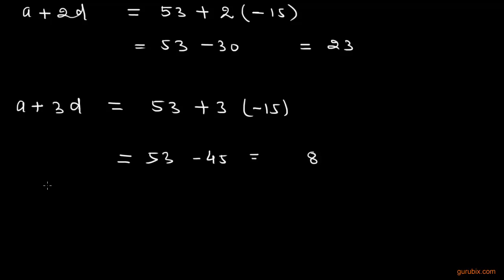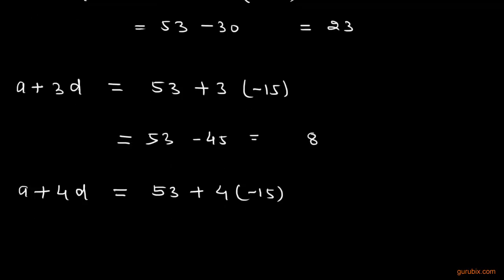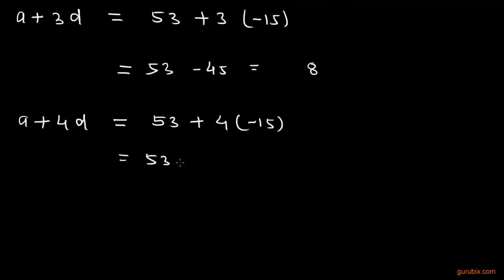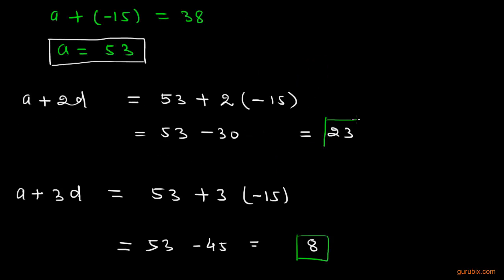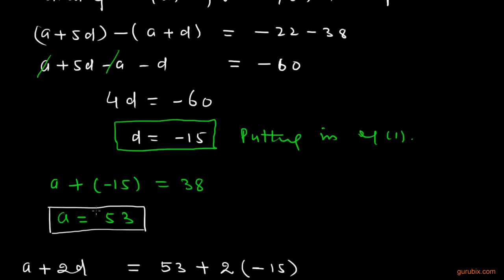Now we shall find out the fifth term, and that is a plus 4d. a is 53 plus 4d is minus 15, and we get 53 minus 60. This means we get minus 7. Therefore, these are the missing terms: minus 7, positive 8, and 23, and 53. These are the missing terms.